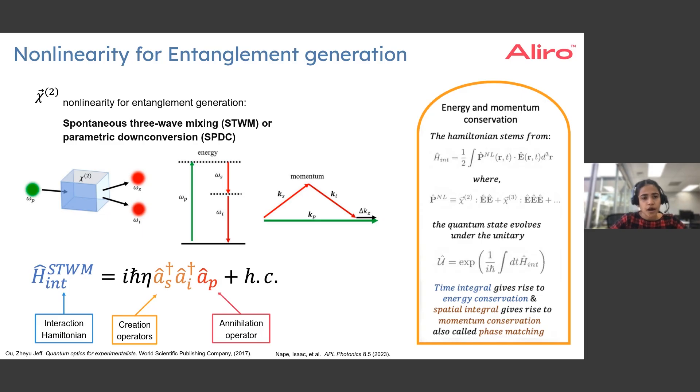We can learn more about how we can use a process called three-wave mixing or spontaneous parametric down-conversion to generate entangled photons.